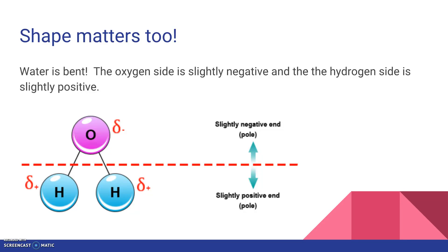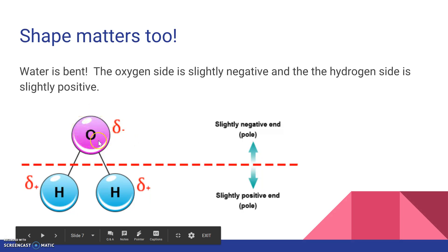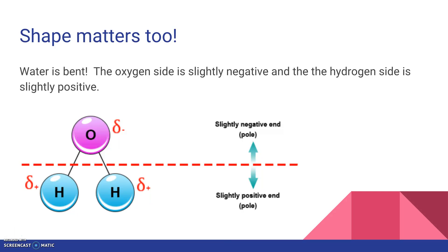That's because shape matters too. Water is a bent molecule — the oxygen has four groups of electrons, and that makes it bent. The oxygen pulls more strongly on the electrons, so it becomes slightly negative and the hydrogen side becomes slightly positive. You can see on the slide that the top is a little negative and the bottom where the hydrogen is is a little bit positive.